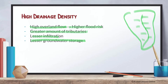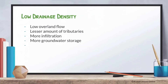With high drainage density, there'll also be lesser infiltration because of the higher volume flow, and hence lesser groundwater storage as well. We've gone through drainage basin hydrology in the previous part — looking at inputs, outputs, stores, and flows. That is basically how you explain the effects of higher drainage density.